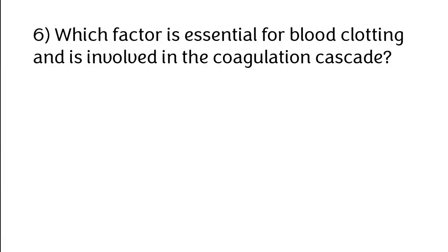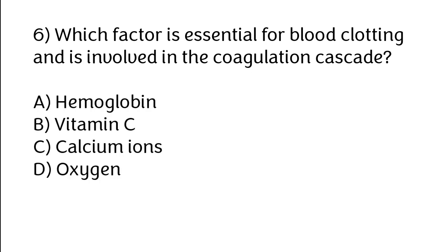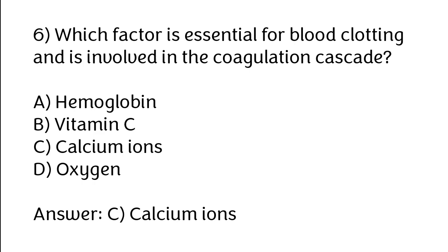Which factor is essential for blood clotting and is involved in the coagulation cascade? Options: Hemoglobin, Vitamin C, calcium ions, oxygen. The correct answer is Option C: Calcium ions.